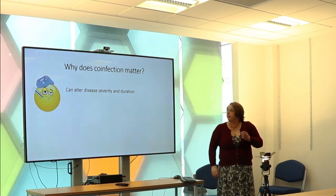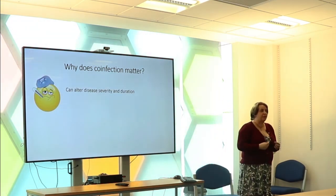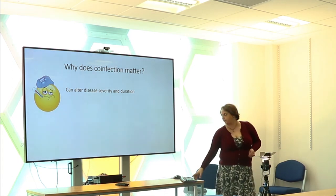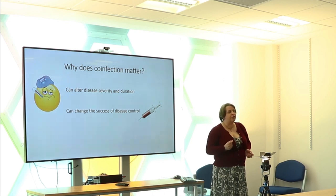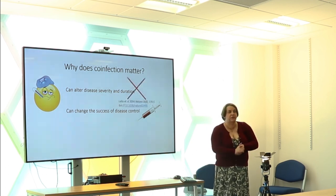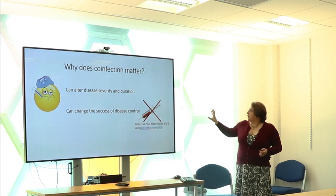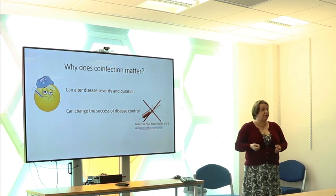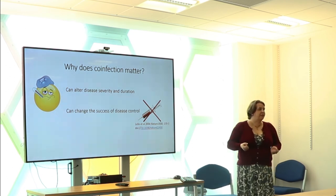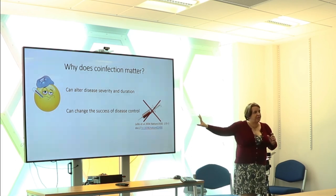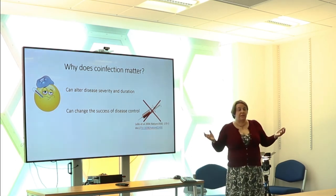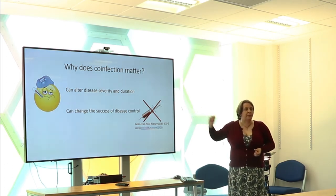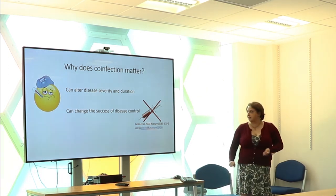Those interactions can alter important things to us. They can alter the severity and the duration of a disease. They can change the treatment success. For example, we published a paper showing that with a simple relationship between three parasites, if we vaccinated against one of them, just by manipulating the relationships between the other parasites, we could change the efficacy of that vaccine — making it completely useless or making it really efficacious — not by changing the vaccine in any way, but only because we changed the relationships between the parasites in the system.